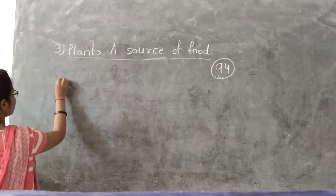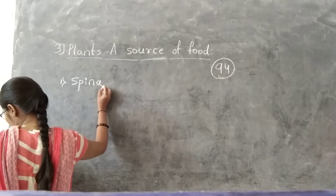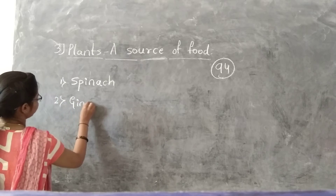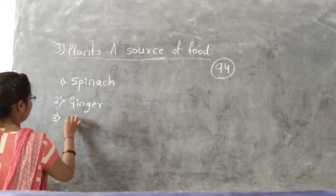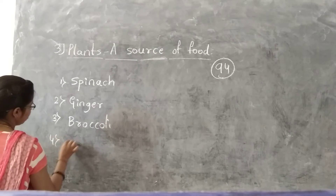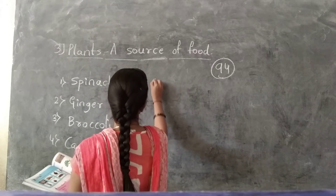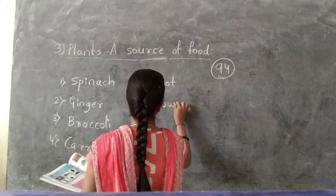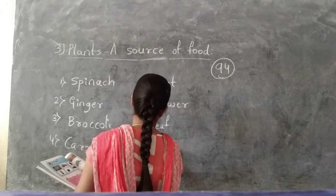Next, there is a match the following exercise. On the left side: first, spinach; second, ginger; third, brinjal; and the last one, carrot. On the right side: root, flower, leaf, stem.